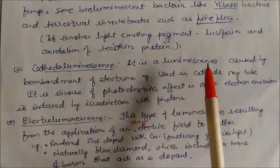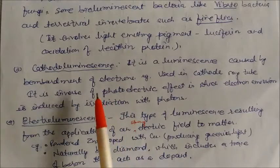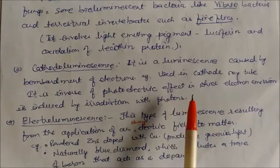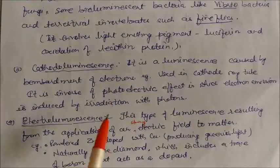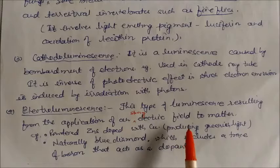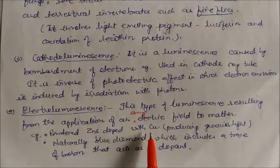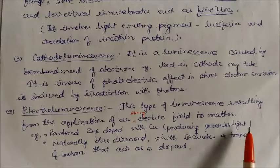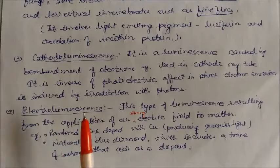Cathodoluminescence: luminescence caused by bombardment of electrons; it is used in cathode ray tubes. It is the inverse of the photoelectric effect, in which electron emission is induced by irradiation with photons. Electroluminescence: luminescence resulting from the application of a strong electric field to matter — for example, powdered zinc sulfide doped with copper produces greenish light. Another example: naturally blue diamonds, which contain trace amounts of boron as a dopant, making the diamond appear blue — this is electroluminescence.